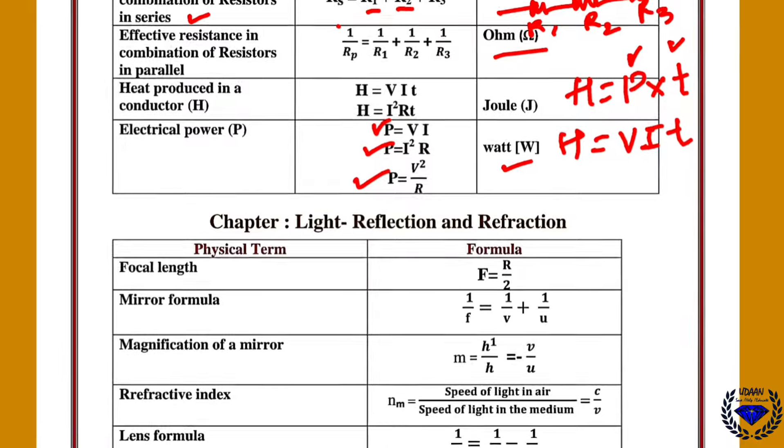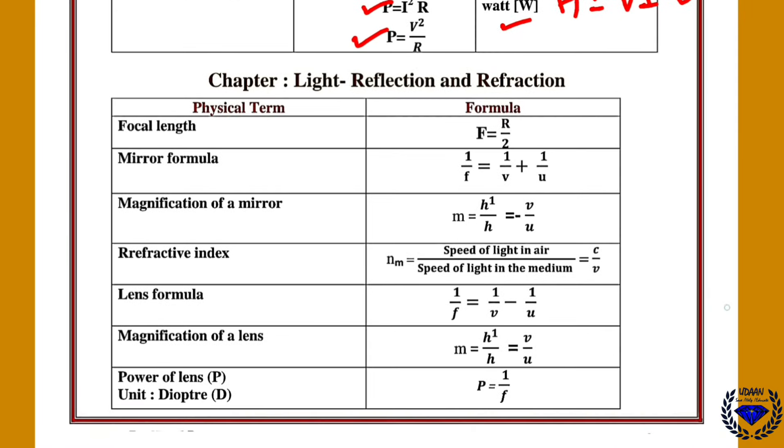Now coming to the most important, that is fixed 3 mark question on this, that is light. So focal length f is equal to R by 2. Here you should use small f. So small f is equal to, R is radius of curvature half, or R is equal to 2 into f.